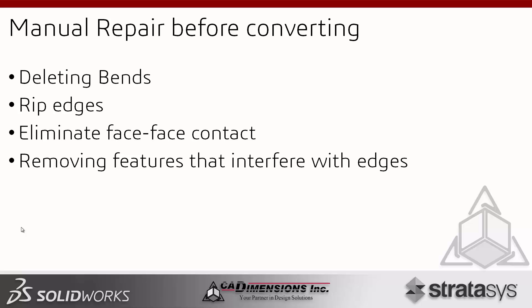We're also going to talk about ripping edges. Convert to Sheet Metal handles that automatically, but with Insert Bends you need to rip those edges beforehand to eliminate face-to-face contact. If you import a model and there is face-to-face contact, SolidWorks will assume those faces are joined, so we need to split them apart. We'll also cover removing features that interfere with edges or bends — sometimes a cut right on a bend needs to be modified.